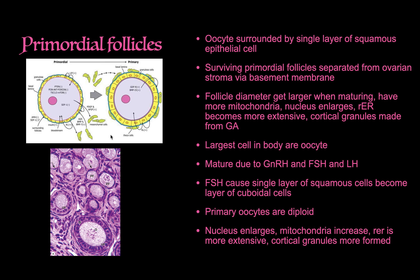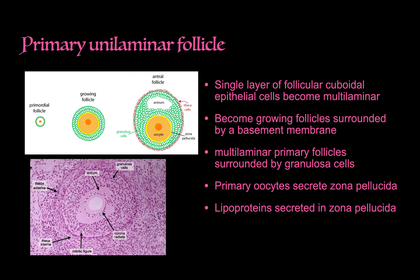FSH causes the single layer of squamous cells to become cuboidal cells, driving maturation. The primary oocyte enlarges, the nucleus gets larger, more organelles and cortical granules are formed. In the next phase, there are multiple layers of cuboidal cells — this is now the multi-laminar phase. The multi-laminar primary follicles are surrounded by granulosa cells, and the primary oocyte produces the zona pellucida.